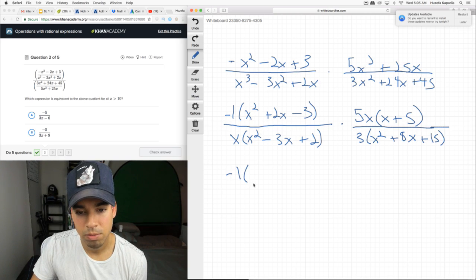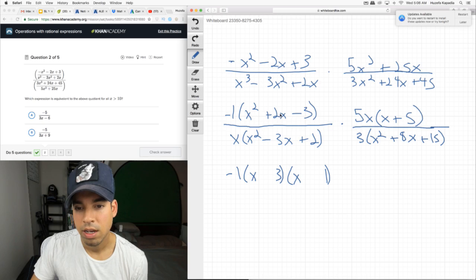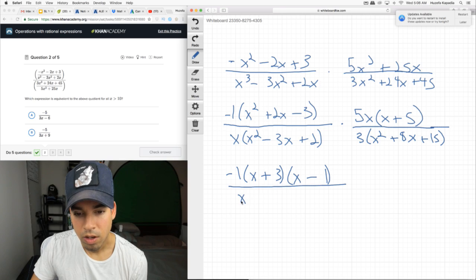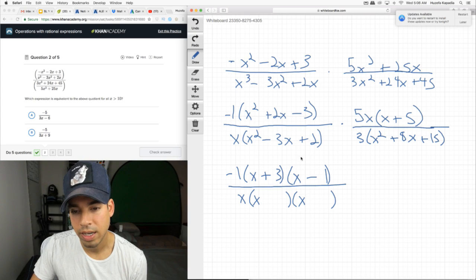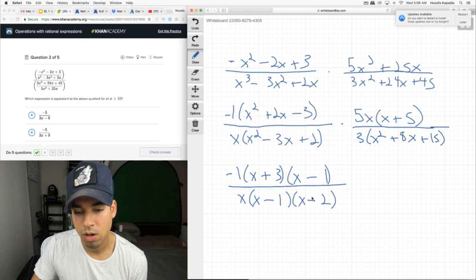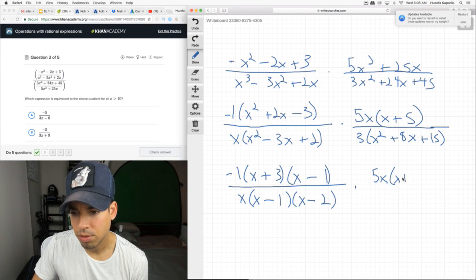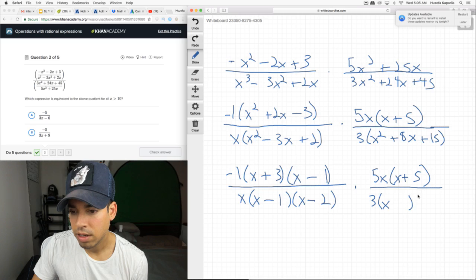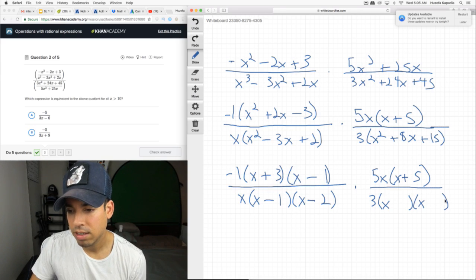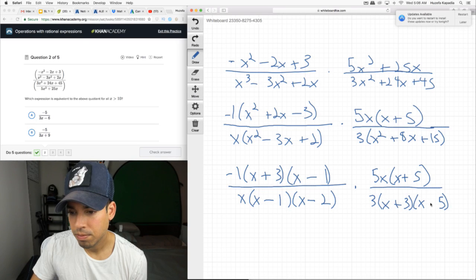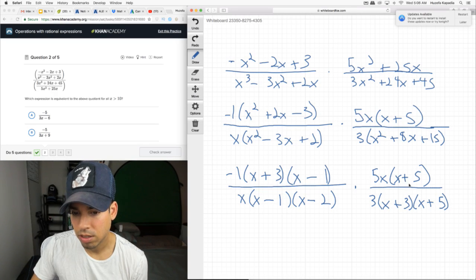So, the top one becomes what multiplies to negative 3 and adds to 2. That's a positive 3 and negative 1. Over, this becomes what multiplies to 2 and adds to negative 3. Well, that's negative 2 and negative 1. And, over here, we've got, this is good on top, 5X times X plus 5. And then, on the bottom, we've got X and X. What multiplies to 15 and adds to 8? That would be 5 and 3. Now, we start canceling. This is going to be really good. It looks like a lot is going to cancel out.